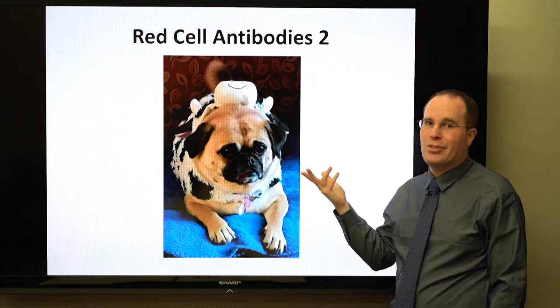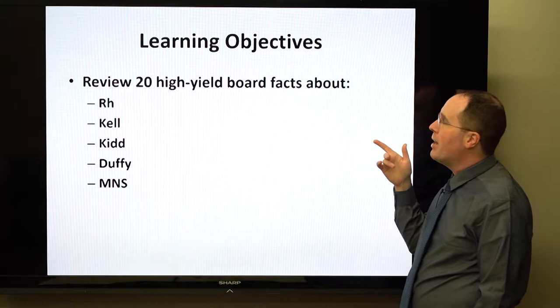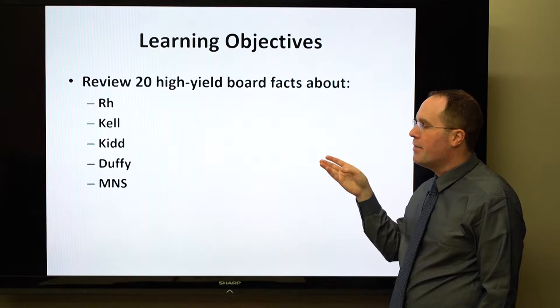In Part 2 we're going to review some high-yield facts about the RH system, the Kell system, Kidd, Duffy, and MNS systems.